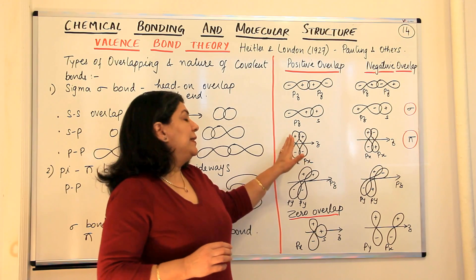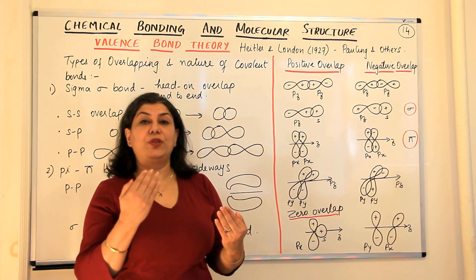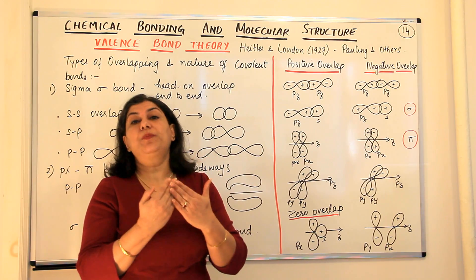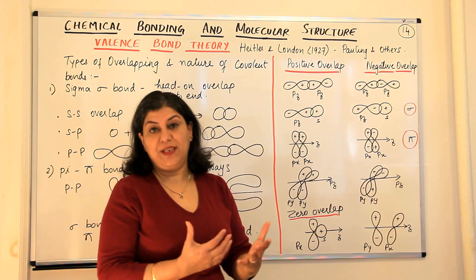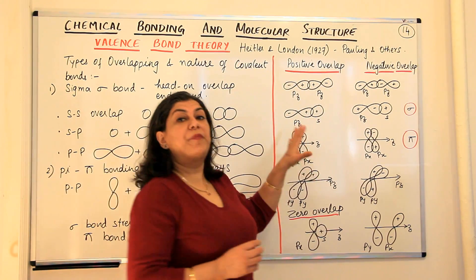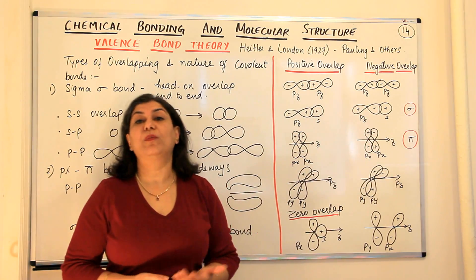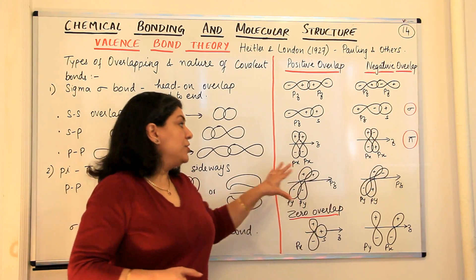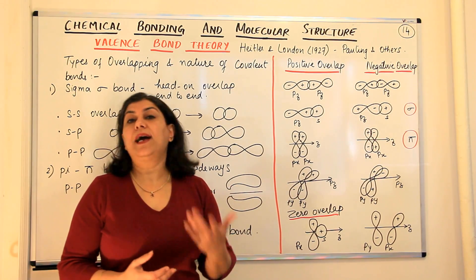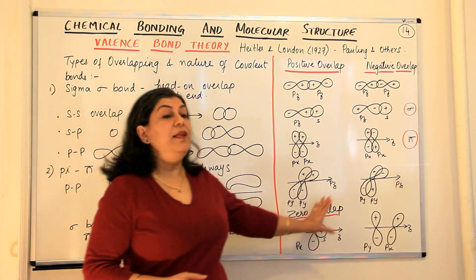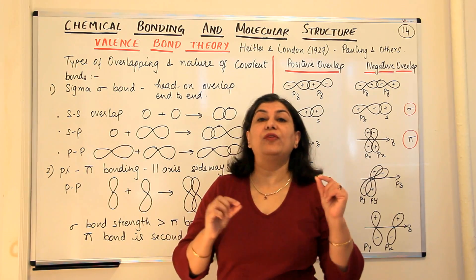When a positive side of the orbital falls over the positive side, there is a reinforcement and that is when the overlap is effective. So a positive overlap results in the formation of a bond while a negative overlap does not result in the formation of a bond. And zero overlap is where overlap is not possible and therefore bond formation is not possible in these directions.